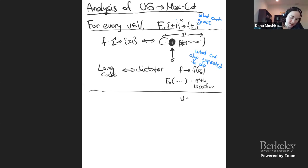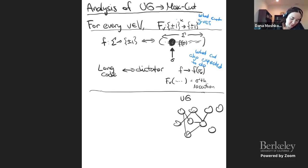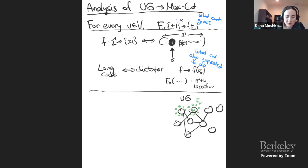So the situation is: I have my unique game with all those vertices, and in the MaxCut each vertex is replaced with many other vertices representing its encoding. You can think of the labeling to those vertices as a function fv. If fv were a dictator, it would have encoded an assignment to V. Otherwise it's some general function.